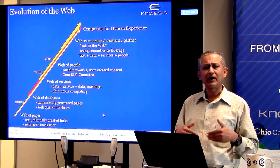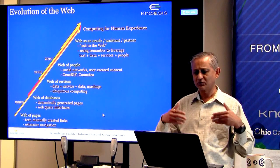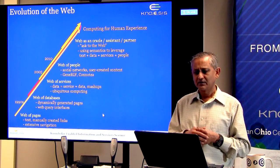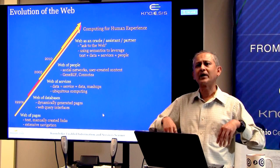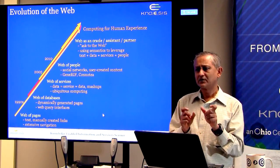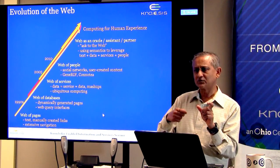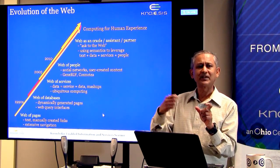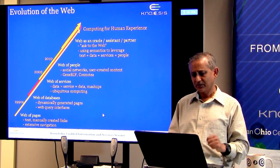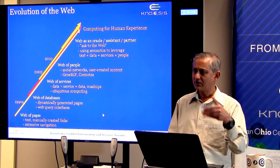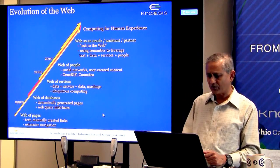Then we started to have what we call the web of people — social networks and user-generated content. There were also extensive group activities. For example, gene annotation is where various biologists would annotate genomic data for sharing. Annotation was a tool also applied in biological and biomedical domains.